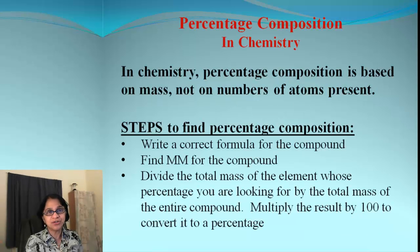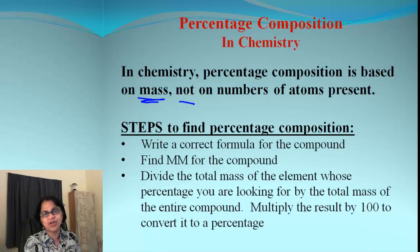And I want you to remind that this is different than what we do normally. We are not going to find out simply the number of atoms and find out the percentage. What we are going to find out is the mass for the element. So always when you use the word percentage in chemistry, it is percentage by mass unless otherwise it is specified.